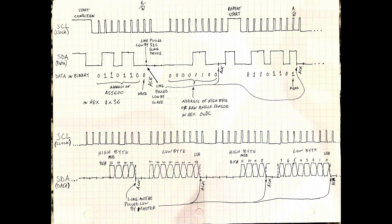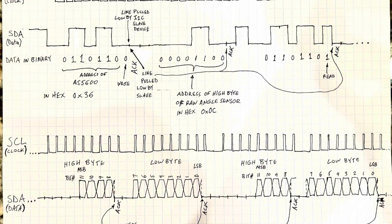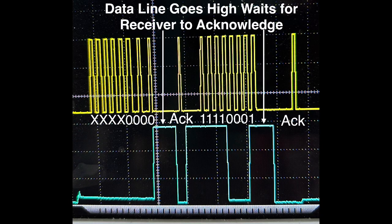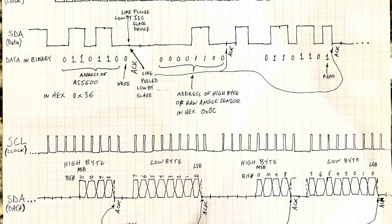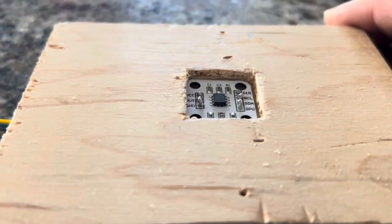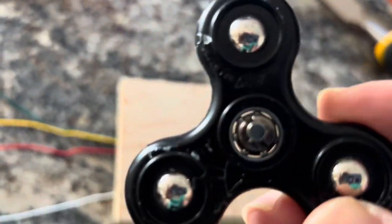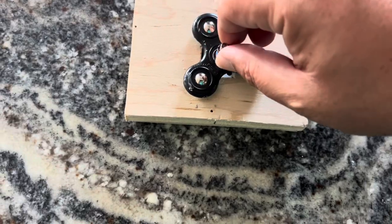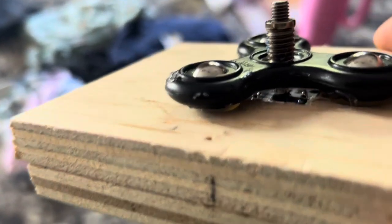After the slave device is addressed, it pulls the line low and allows the master device to acknowledge that it's receiving the data. The next step is to enter a unique register address on the slave device — in this case it's 0x0C, which is the high byte of the angle sensor on the AS5600. Once acknowledged, you do a repeat start and re-address the AS5600, but this time the last bit is set to one, which is the read bit. After eight clock pulses you get data from the high byte, then it automatically switches to the low byte — the lower eight bits — since this is 12 bits total.